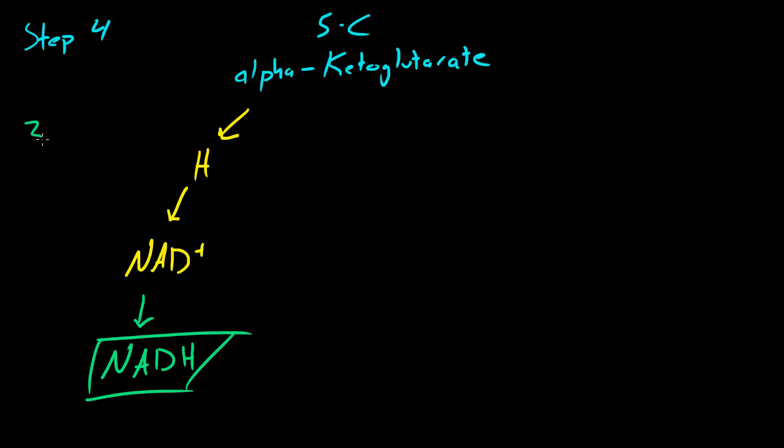So actually this is pretty important to remember because in steps 3 and 4 we got an NADH and remember that every one of these molecules is actually going through the process twice. So each of these steps actually generate two NADHs because remember in glycolysis what happened is that glucose molecule split into two acids. So even though I'm showing this demonstration for one molecule, this is actually two molecules per glucose.